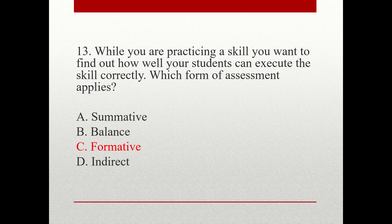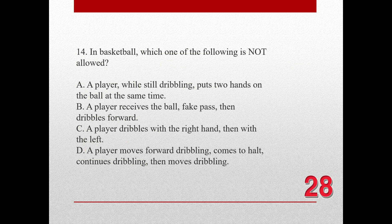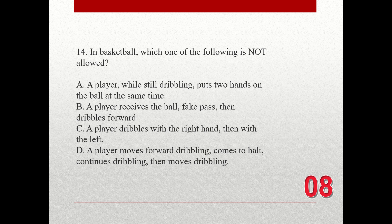Question number fourteen. In basketball, which of the following is not allowed? A. A player, while still dribbling, puts two hands on the ball at the same time. B. A player receives the ball, fakes a pass, then dribbles forward. C. A player dribbles with the right hand, then with the left. D. A player moves forward dribbling, comes to a halt, continues dribbling, then moves dribbling. The correct answer is A. A player, while still dribbling, puts two hands on the ball at the same time.